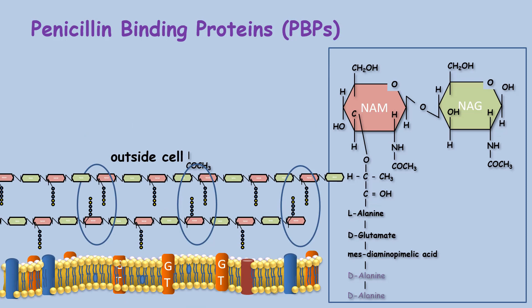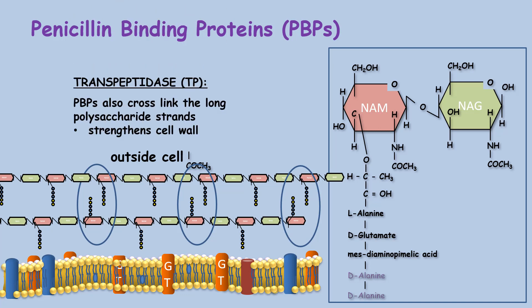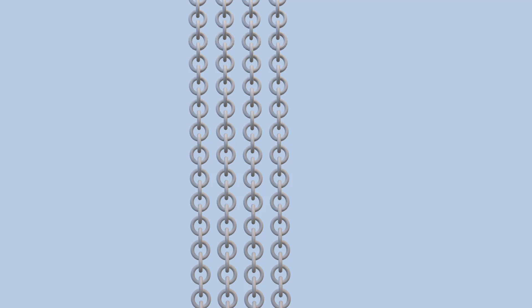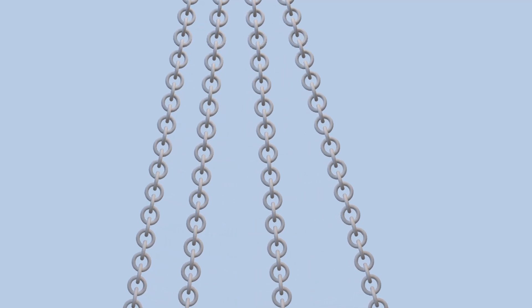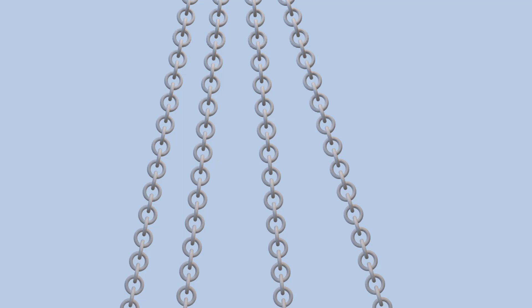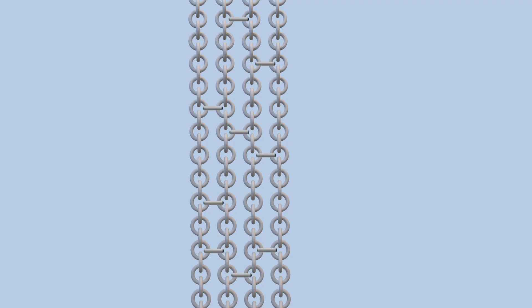Penicillin binding proteins have a second enzyme function called transpeptidase, which joins the long polysaccharide strands together to form a rigid carbohydrate layer. If you associate a long polysaccharide chain to a chain with many links, a series of chains side by side — like peptidoglycan polysaccharides — can easily move, and this would not make for a rigid cell wall. Instead, cross-linking them prevents the chains from moving away from each other, similar to the chain mail a knight in shining armor would wear, adding extra protection.